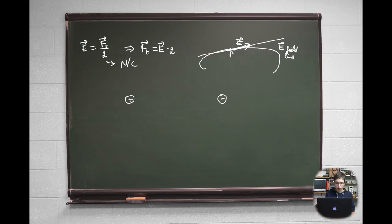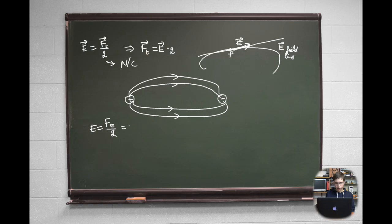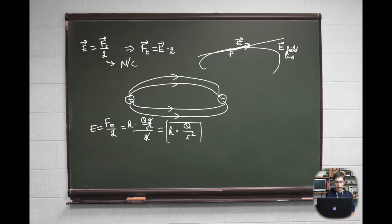The electric field of a point charge can be calculated using a form of Coulomb's law derived from the expressions for electrostatic force and electric field. Starting from E equals Fe over Q, and substituting the expression for electrostatic force, we get the final formula: E equals K times source charge Q over r squared. This formula is very similar to Coulomb's law, although the test charge small q has disappeared because it cancels out when dividing F by small q.